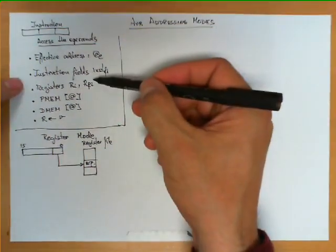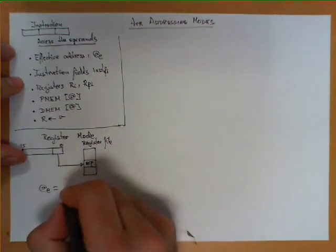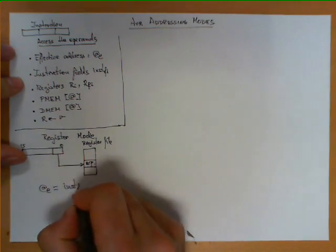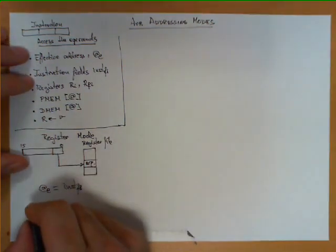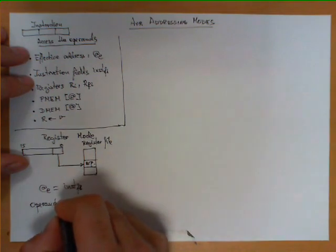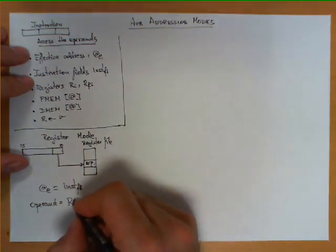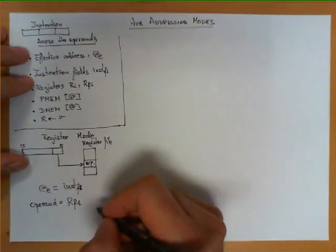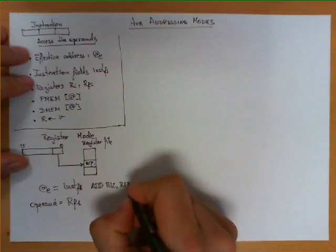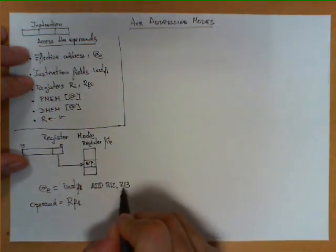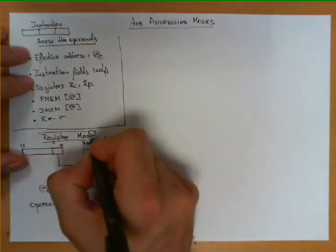In terms of notation, the effective address of the operand is specified by field F sub 1 of the instruction, and the operand is actually R sub F sub 1 — the register whose index is encoded in that field. An example of this addressing mode: the instruction OR R12, R13 has two operands, and both of them are using the register addressing mode. This is the simplest one.